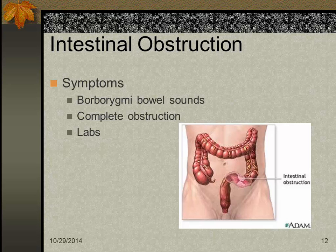Next week we'll cover GU, and the following week is acid-base balance where this will all relate. Labs we'll see include elevated WBC, and because of dehydration, there will be impacts on H&H, BUN, creatinine, and electrolytes from fluid losses.